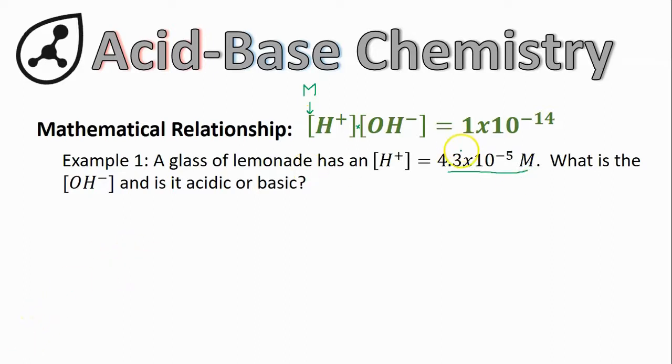So from here, it's actually pretty simple. You take the value you were given, in this case it's the H+ concentration, plug that in and solve for whatever's missing, the OH-. So here's what it looks like with the H+ concentration plugged in. Now all I've got to do is rearrange algebraically to get OH- by itself.